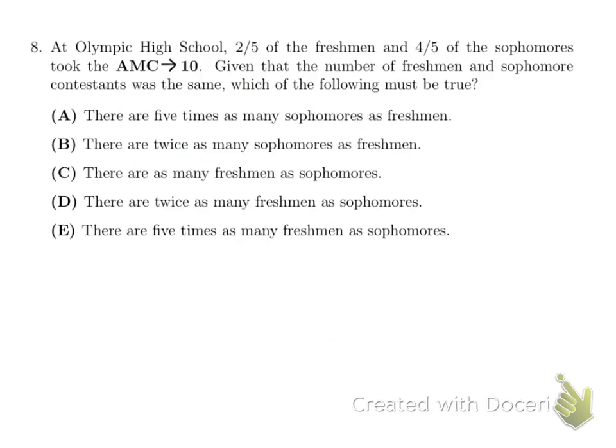Let's move on to the next question, number 8. At Olympic High School, two-fifths of the freshmen and four-fifths of the sophomores took AMC-10, given that the number of freshmen and sophomore contestants were the same. That means these are equal to each other. So, five can cancel out because they have the same value. Then F, by dividing it by two, then we get to realize that F is equal to 2S. That means we have twice as many freshmen as sophomores, which is choice D.